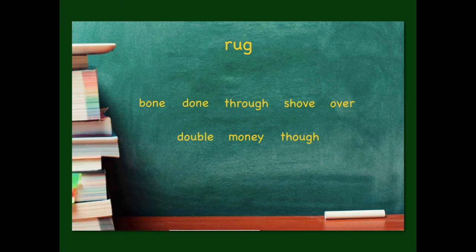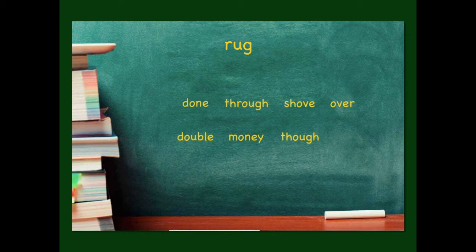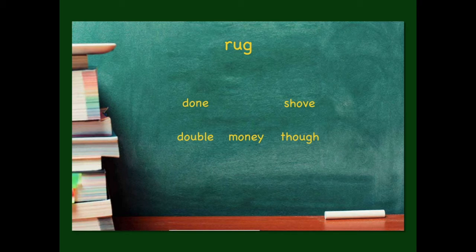Okay, here we go. First we have bone — rug, bone — no. Then done — rug, done — yes. Through — no. Shove — rug, shove — yes. Over — no, that can go. Double — yeah, that can stay. Money — yeah, that stays. And last one, though — no, though can go. There we go.